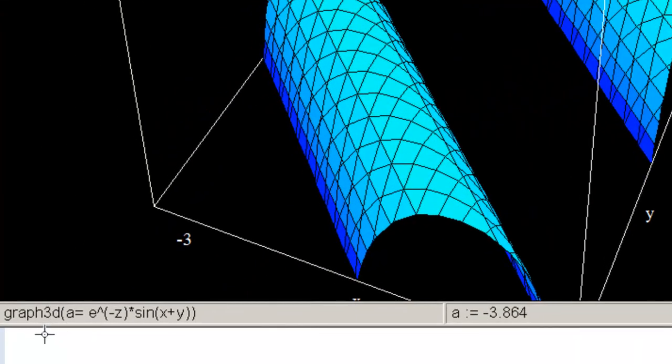where it says graph 3d, and then it says a equals e to the negative z times sine xy. We can't plot the full function itself, because really you would need four dimensions. You would need x, y, z, and a fourth one, temperature. And we can't do that because we're limited to visualizing three-dimensional space on a two-dimensional screen. But we can hack it. We can get around that.